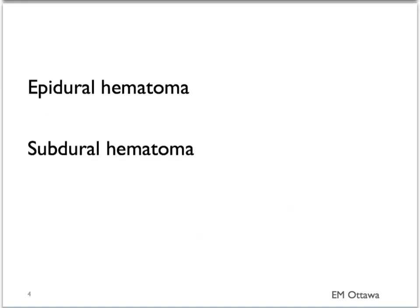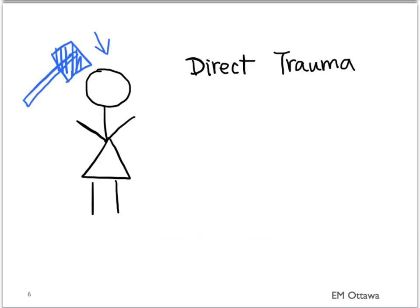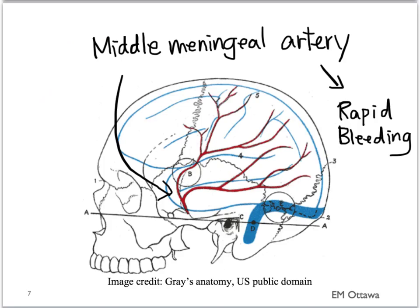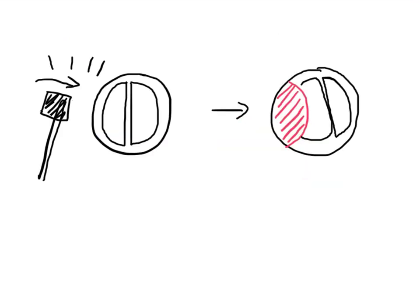We will now discuss the specific presentation of epidural and subdural hematoma. Epidural hematoma is caused by direct trauma to the area, specifically trauma to the temporal bone. Trauma to the temporal bone can cause disruption of the middle meningeal artery, shown here in red. Blood from the artery then rapidly accumulates, and the rapidly accumulated epidural hematoma pushes the brain out of the way.